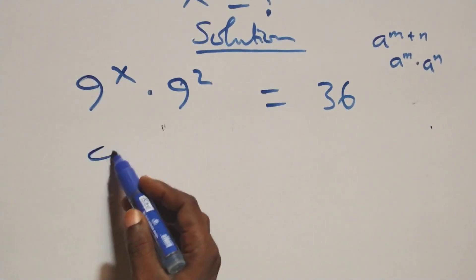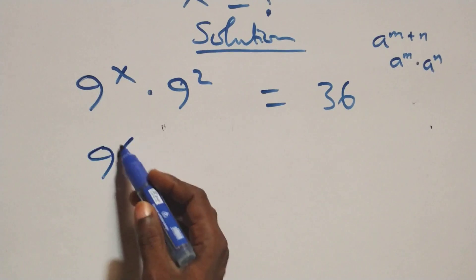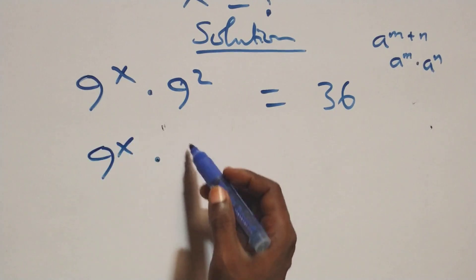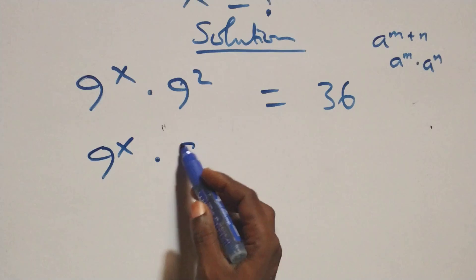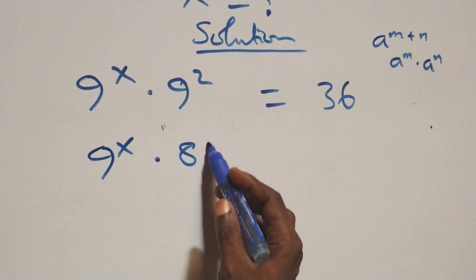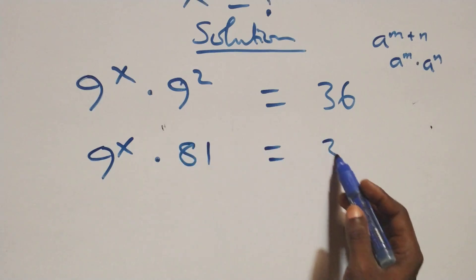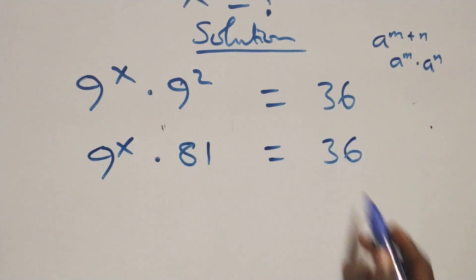We can write it as 9 raised to power x times 9 squared — that's 9 times 9, which is 81 — and this equals 36 on this side.